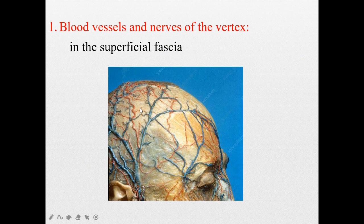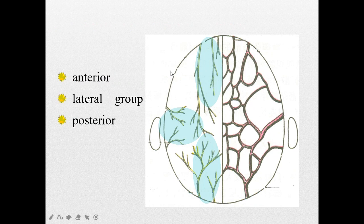Now let's learn about the vessels of the vertex. They are located in the superficial fascia of the scalp ridge and are divided into three groups: anterior group, posterior group, and lateral group.